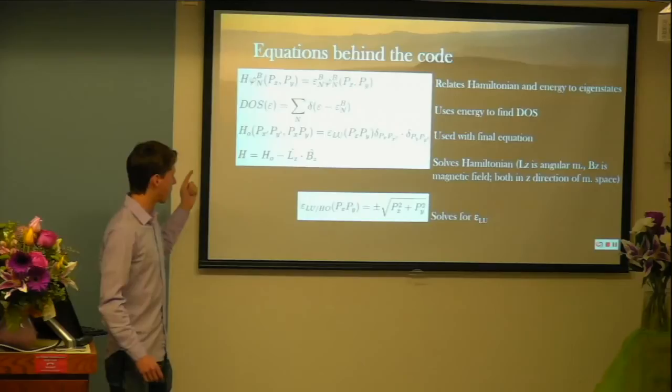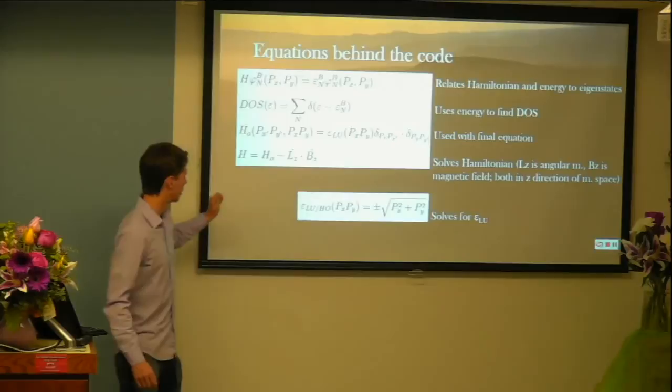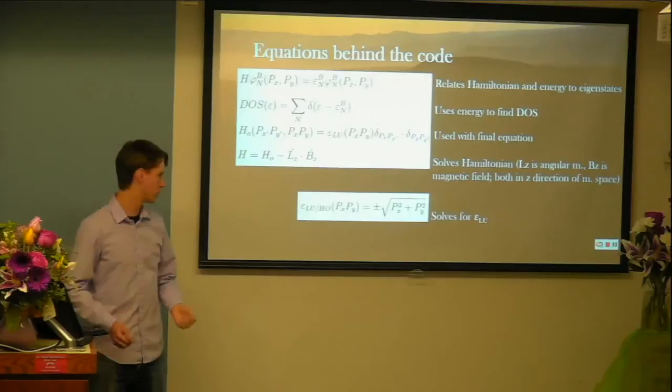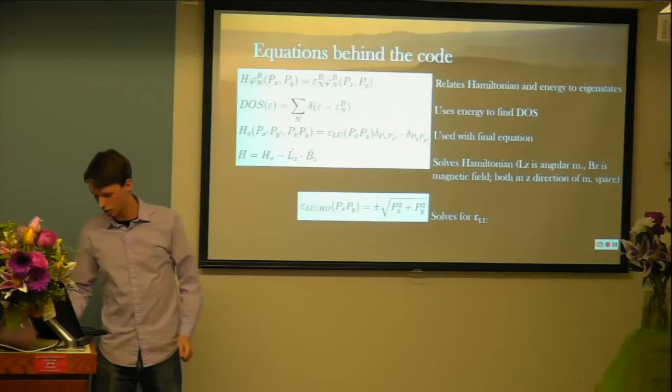And then moving past that, this equation is used alongside this once this is solved, and it can be plugged back in, as you can see here. And then this is just an equation for the Hamiltonian with O sub Z being angular momentum, V sub Z being magnetic field, and both of these are actually in the momentum space and not in any position.